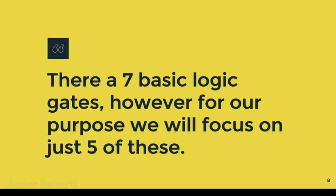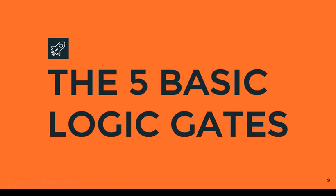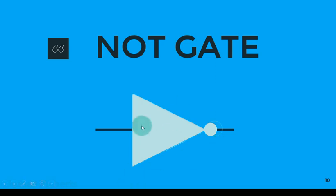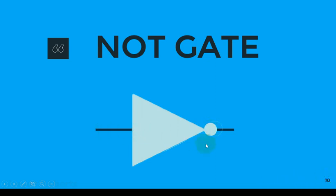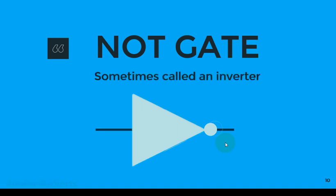Logic gates are used to make more complex electronic devices such as latches, flip-flops, storage devices, and so on. There are essentially seven basic logic gates; however, for our purpose we will only focus on just five of these. The first logic gate is what we call the NOT gate. This is the symbol of a NOT gate — it's essentially a triangle with a bubble at the end. It takes in a single input and produces a single output. The NOT gate is sometimes referred to as an inverter.